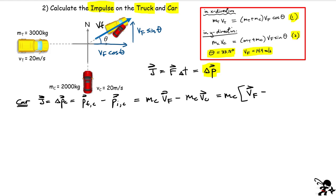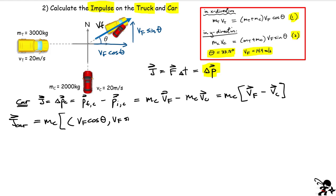Writing these as two-dimensional vectors: the final velocity has components vf·cos(θ) in x and vf·sin(θ) in y. The initial velocity of the car is only in the y direction: zero in x and vc = 20 m/s in y. To avoid rounding errors, I'll substitute the conservation-of-momentum expressions for vf·cos(θ) and vf·sin(θ) directly in terms of masses.